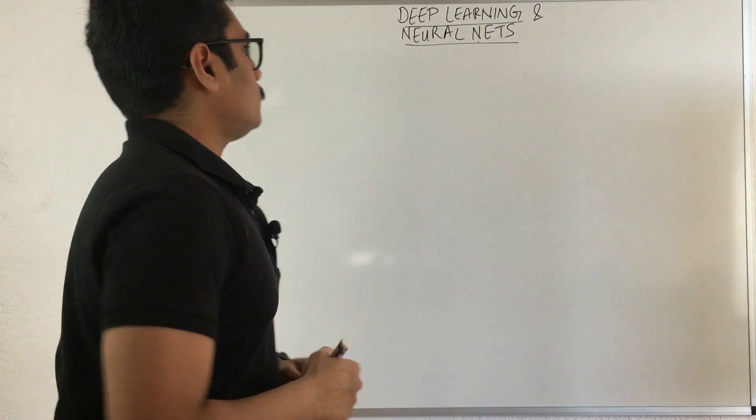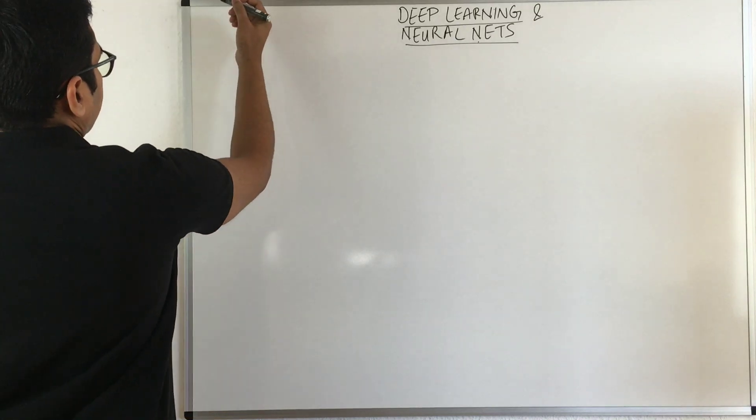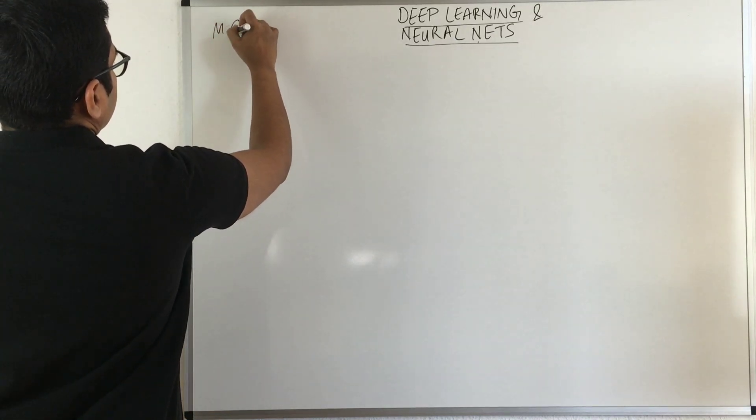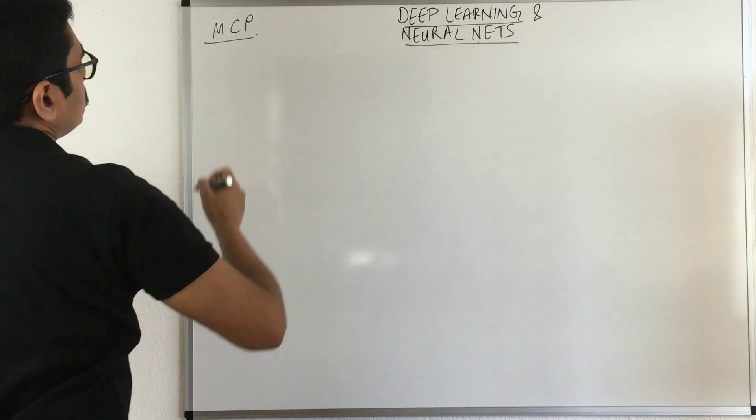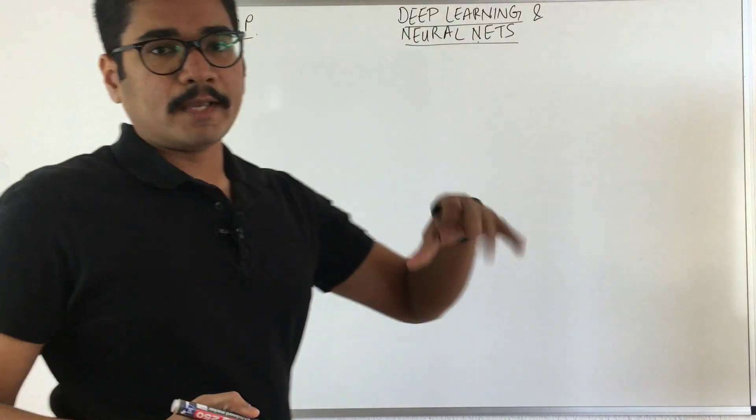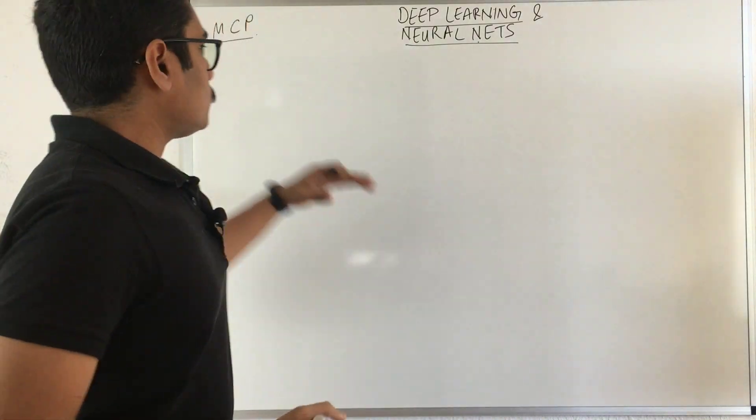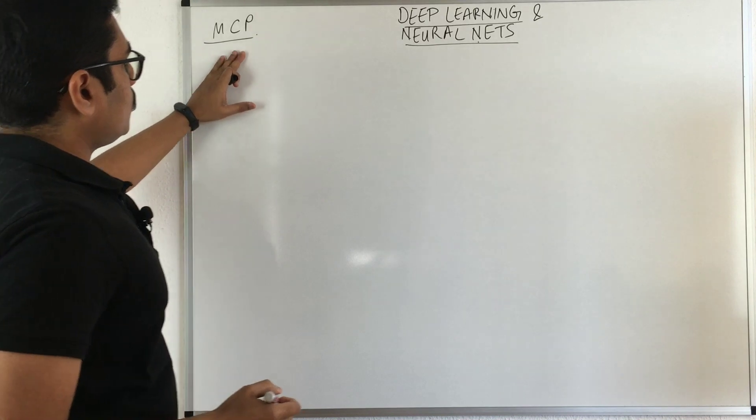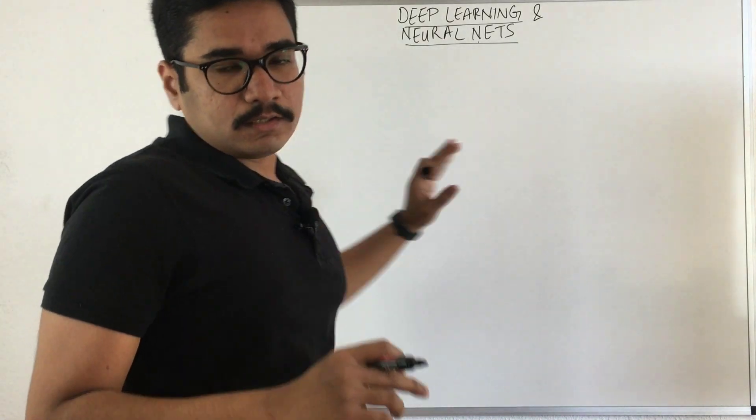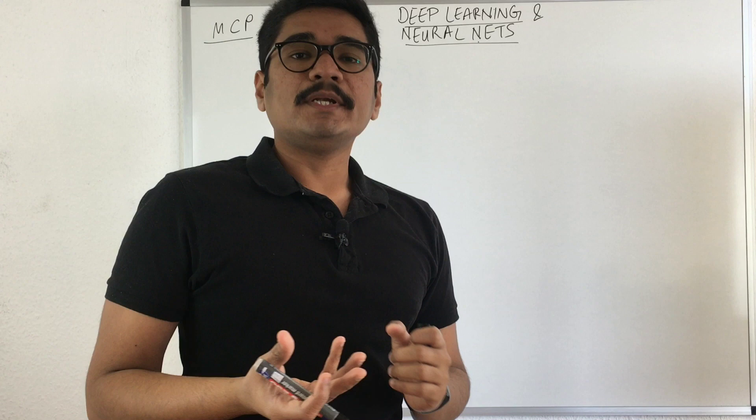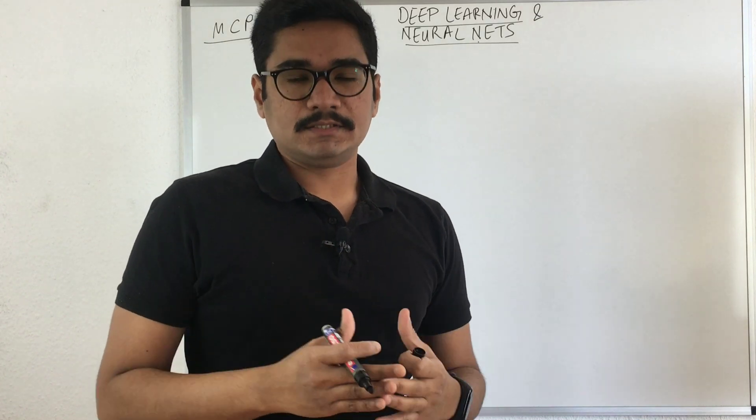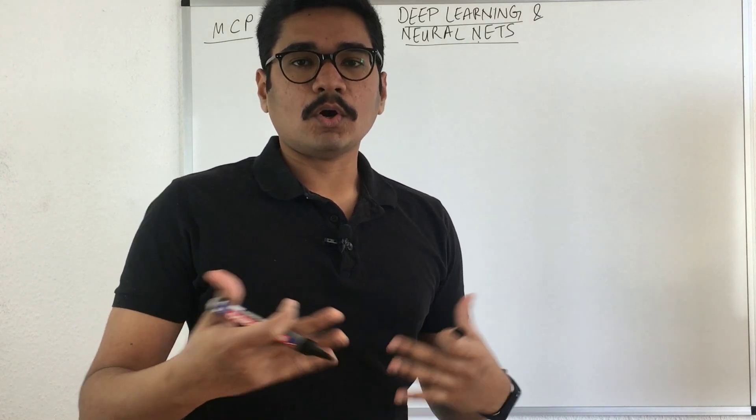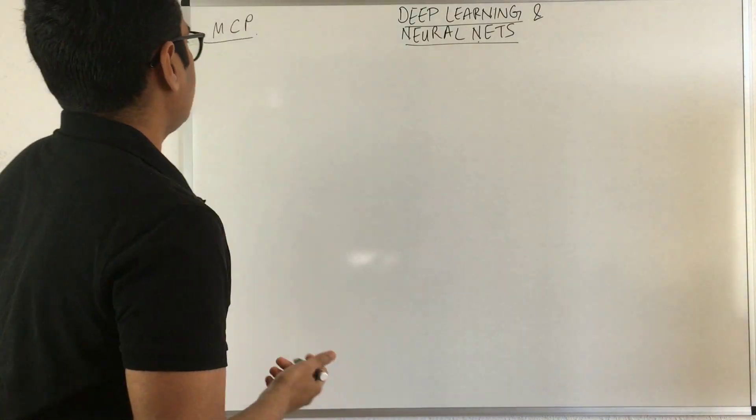The very first neuron was put forth by MCP, that is McCulloch and Pitts neuron. They put forth a neuron to check whether these neurons can implement simple Boolean gates like AND, OR, and different gates.